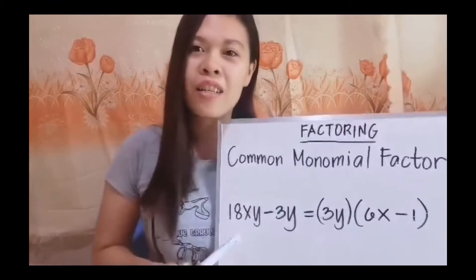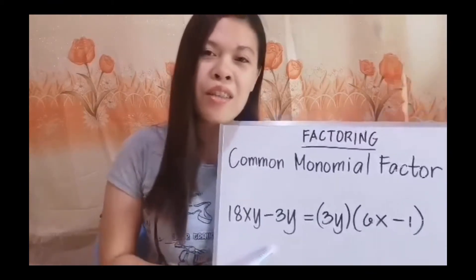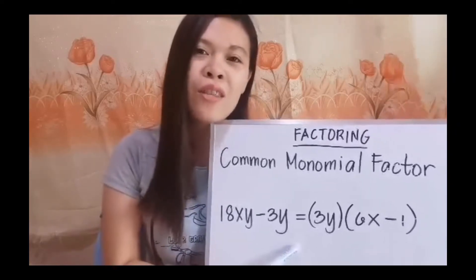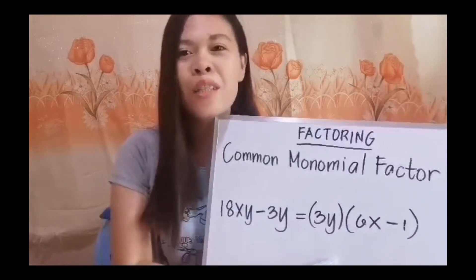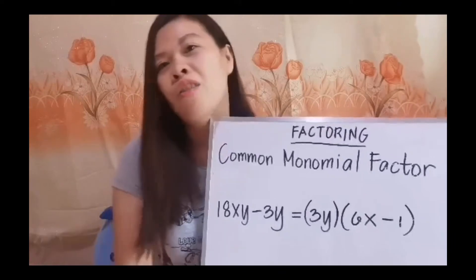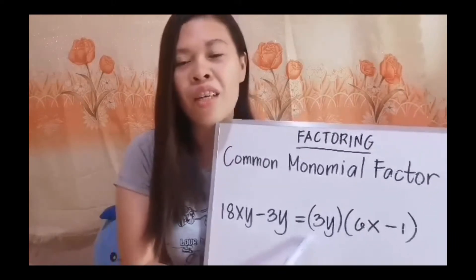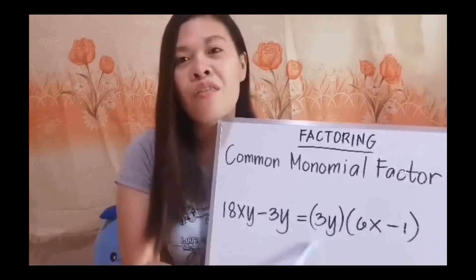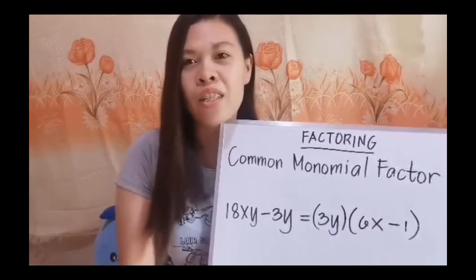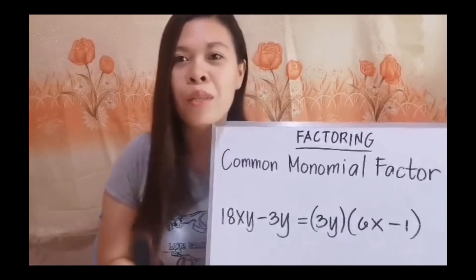We have here: 18xy minus 3y equals the quantity of 3y times the quantity of 6x minus 1. As usual, we will be having two or more factors in factoring polynomials.